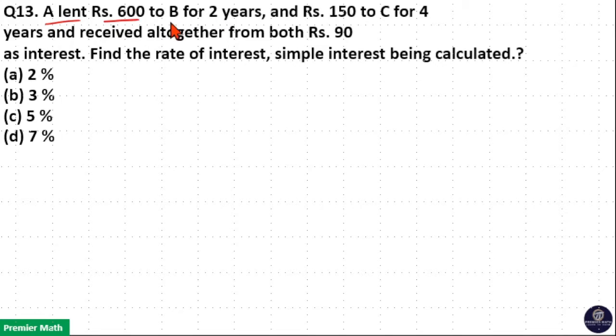A lent Rs. 600 to B for 2 years and Rs. 150 to C for 4 years and received altogether from both Rs. 90 as interest. Find the rate of interest, simple interest being calculated.